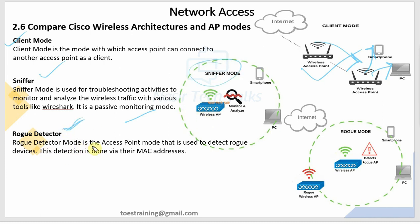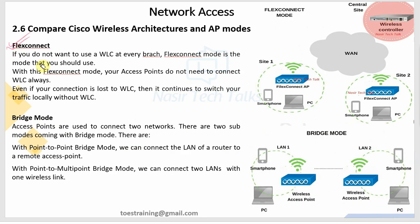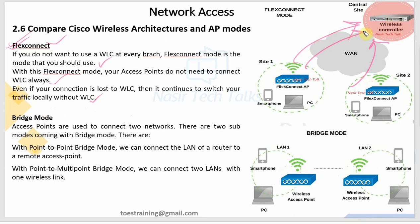Rogue Detector mode is an access point mode used to detect rogue devices - specifically rogue access points on the network. FlexConnect mode is used when you don't want to depend fully on the Wireless LAN Controller at every branch. With FlexConnect, even if the connection to the WLC is lost, the AP continues to switch traffic locally without the WLC, supporting local clients and internet service.